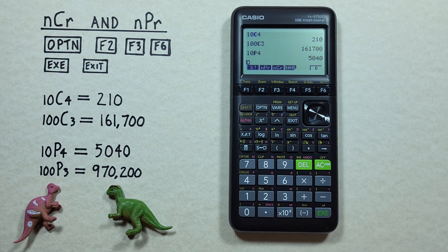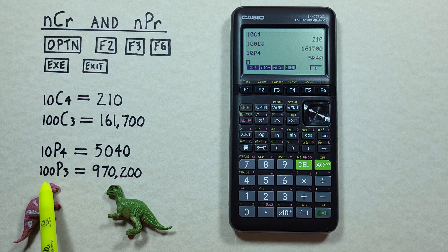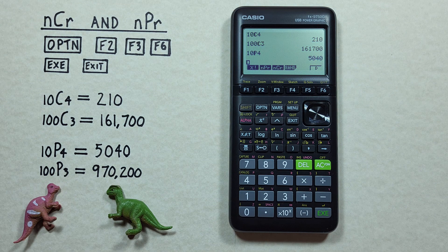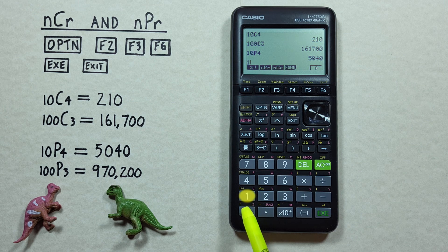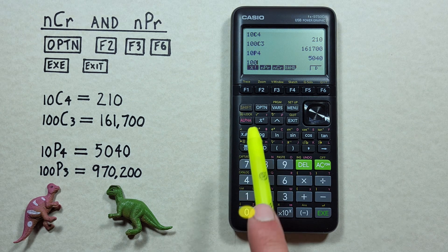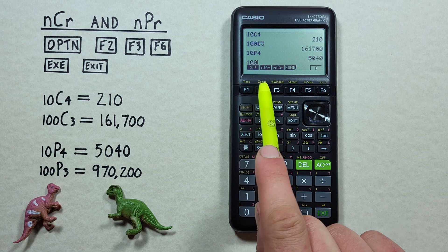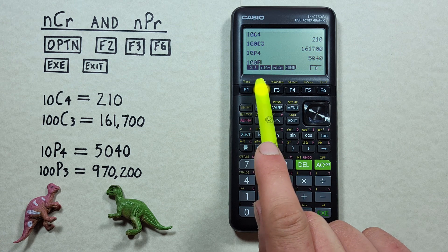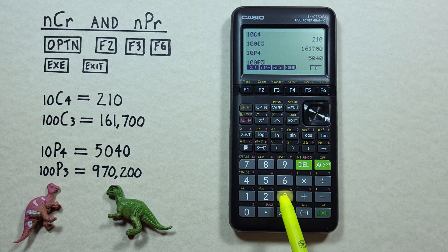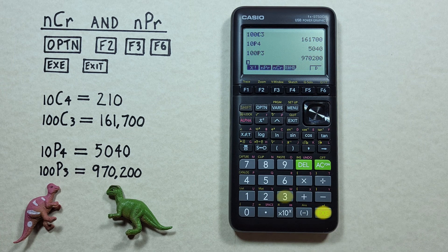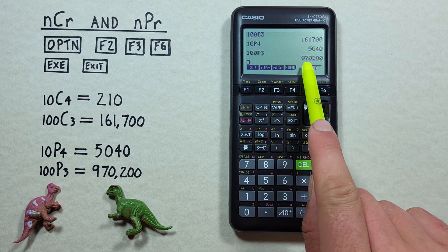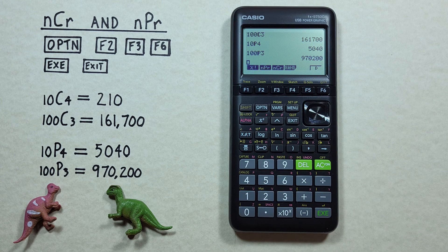A second permutation example, let's say we had 100 objects and wanted to choose 3 permutations. Again, we enter the 100 first, hit the F2 for the NPR or permutation, and then the 3, and hit EXECUTE. And we see we get a result of 970,200 possible permutations.